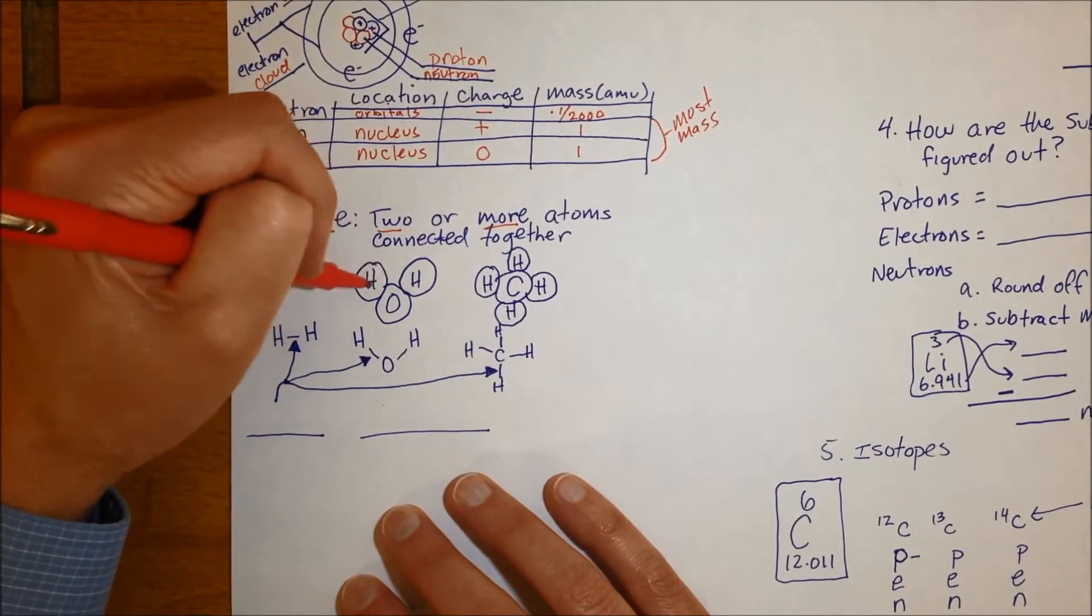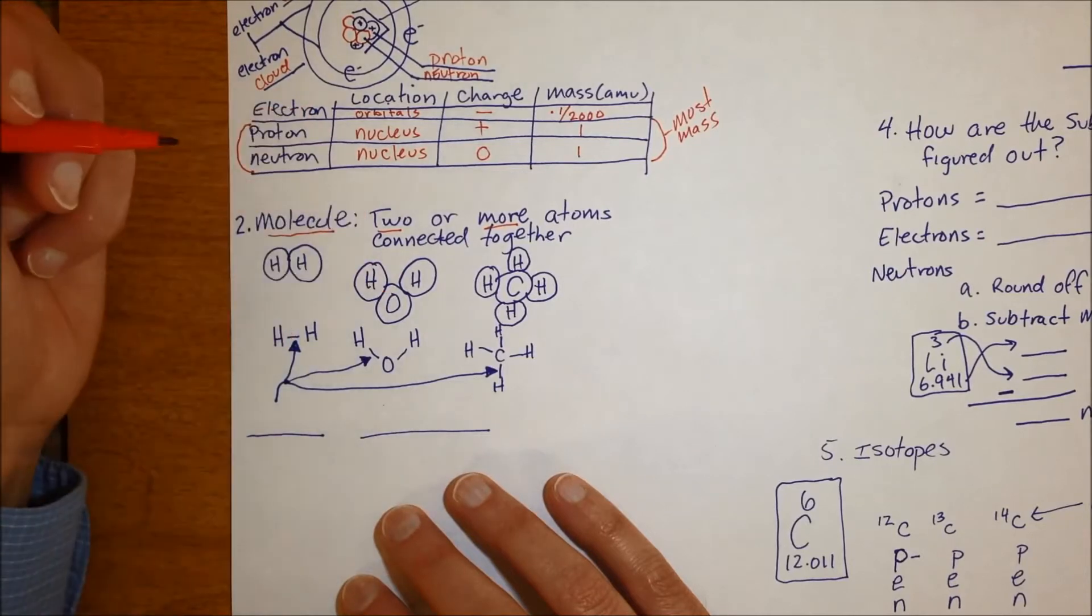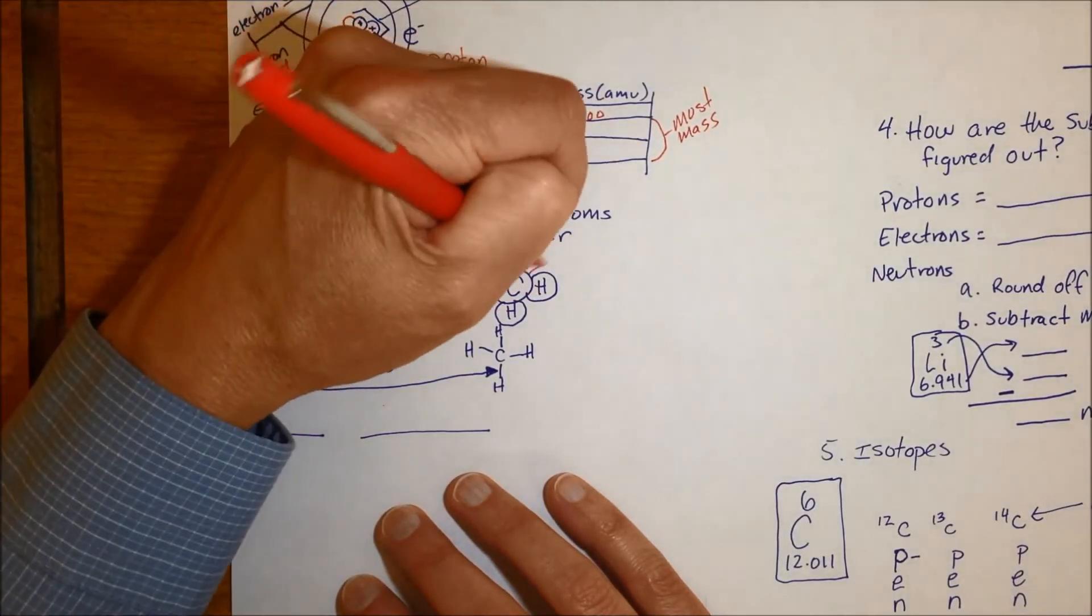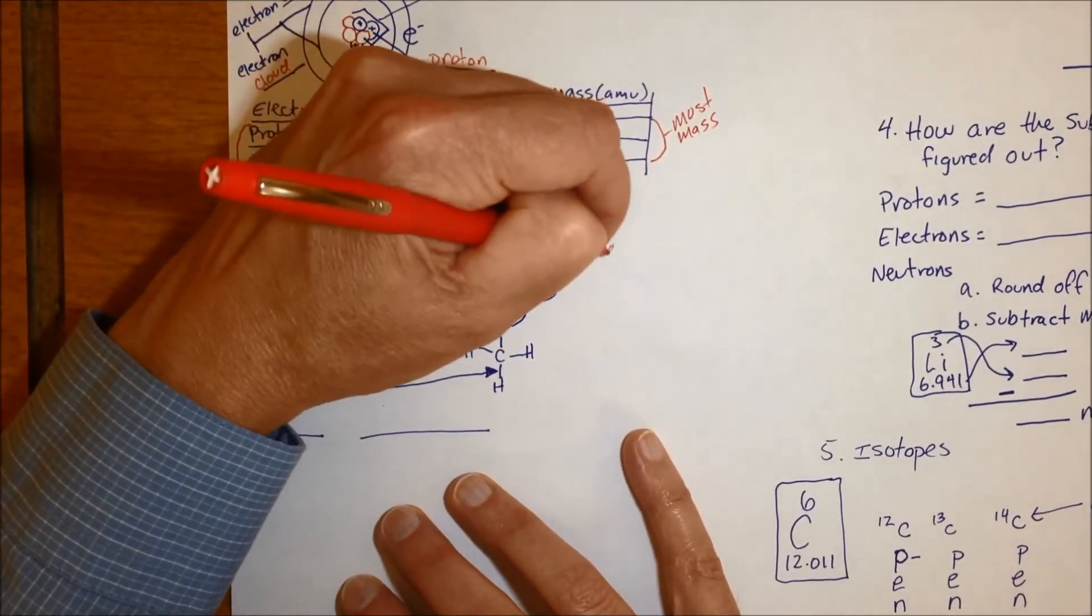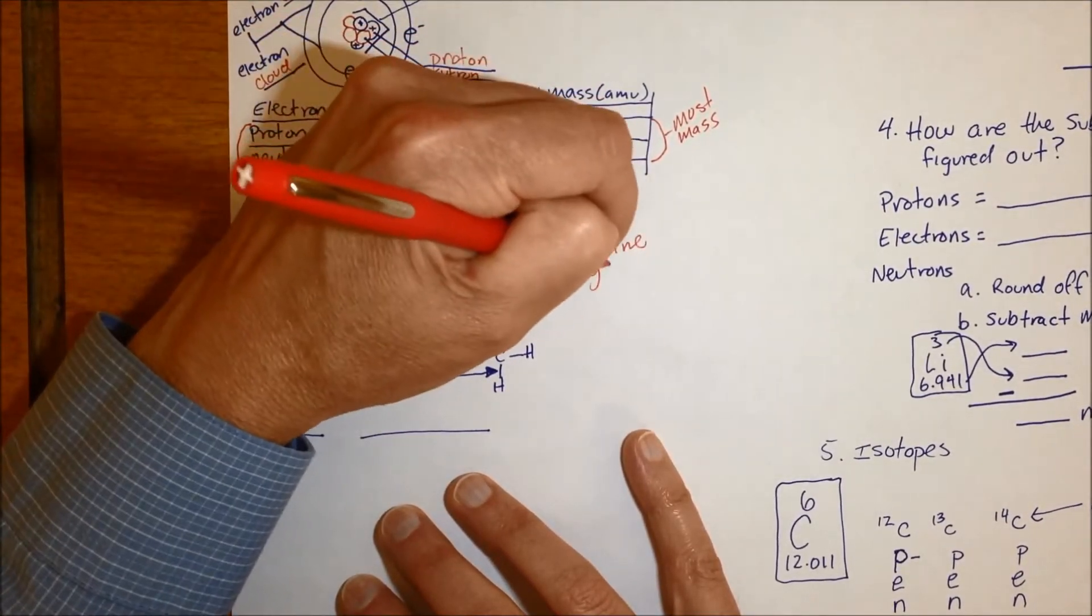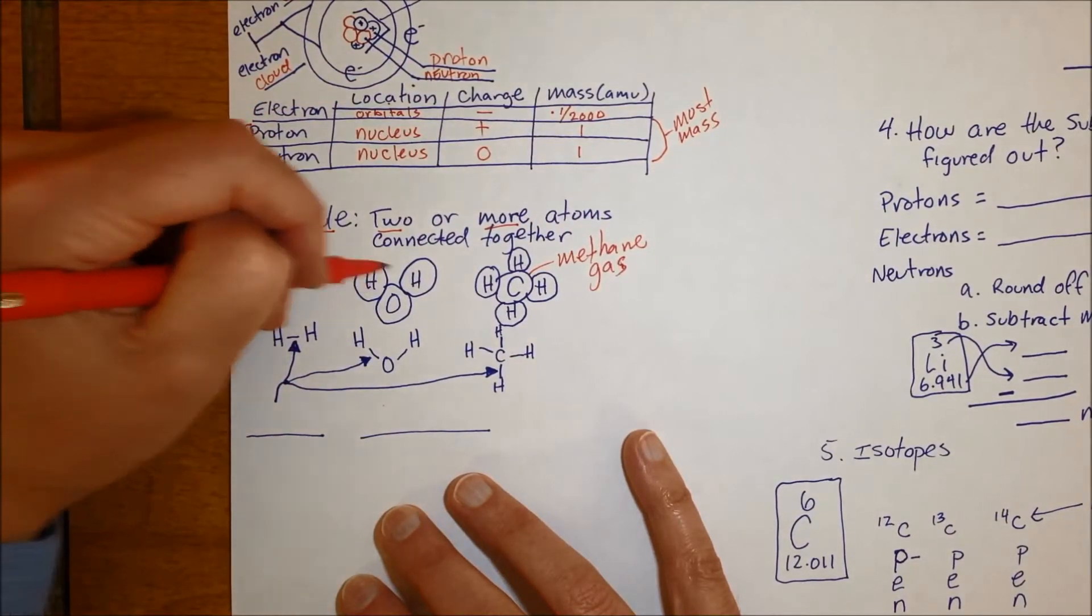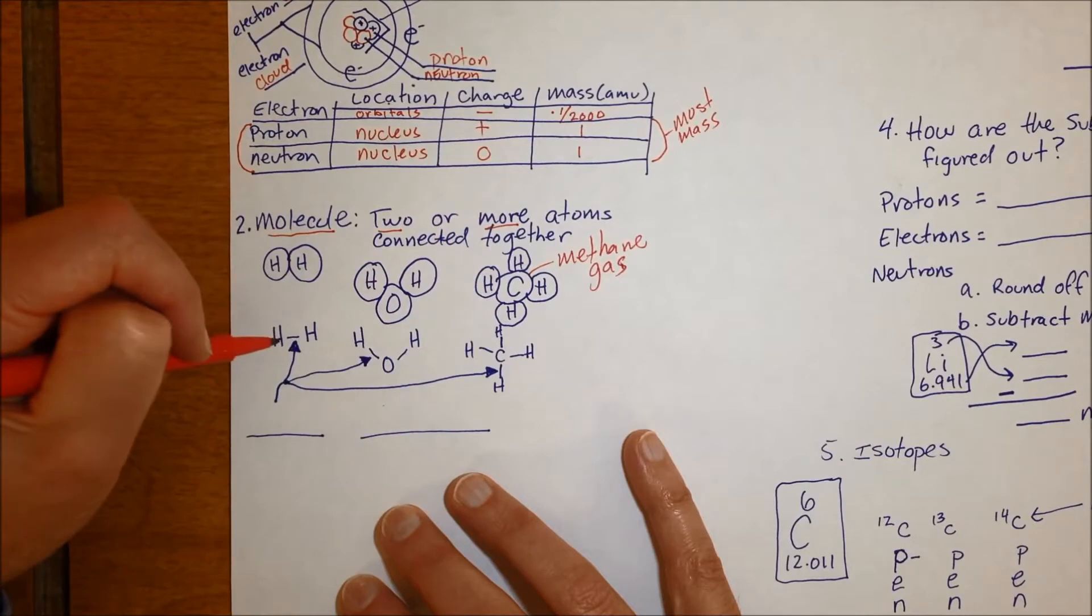This one here, you might be able to guess. Two hydrogens and an oxygen, that's water. This one here has four hydrogens and a carbon, that's actually methane. Methane gas, the kind of gas that comes out of your stove that you cook with.